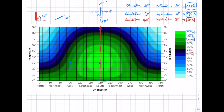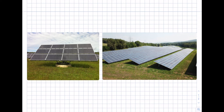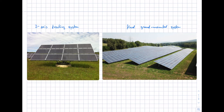Finally, let's look at systems that track the sun. On the left is a two-axis tracking system, and on the right is a fixed ground-mounted system. The tracking system is driven by a motor — it knows the position and movement of the sun and can track it on two axes, changing both the orientation angle and inclination angle so it is always perpendicular to the sun's radiation. The fixed system on the right cannot change its orientation or inclination.